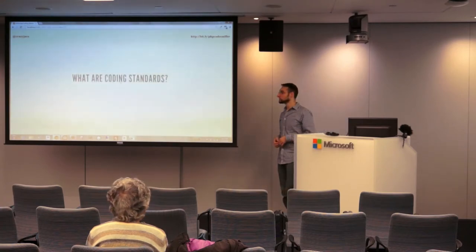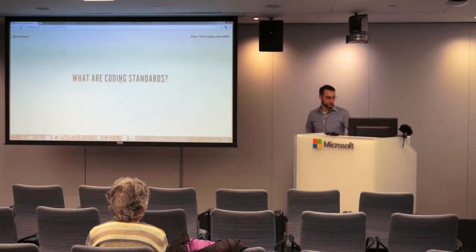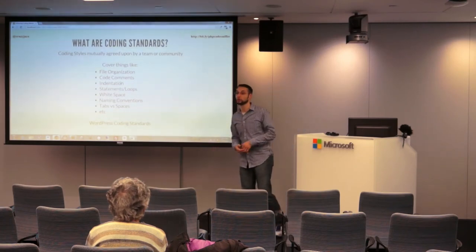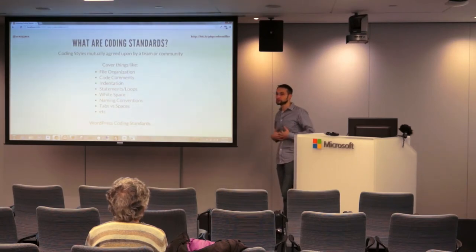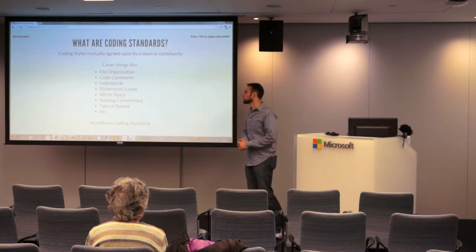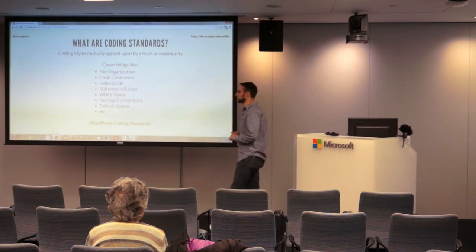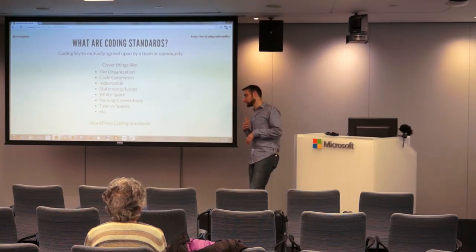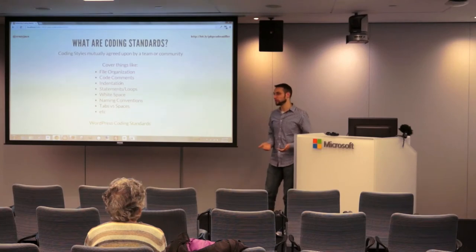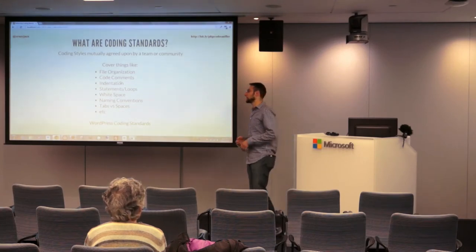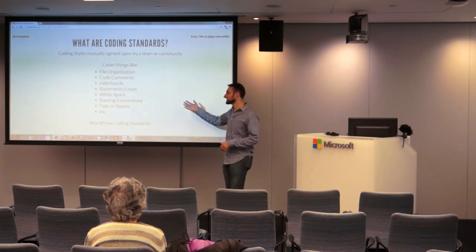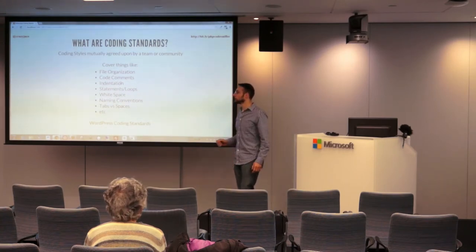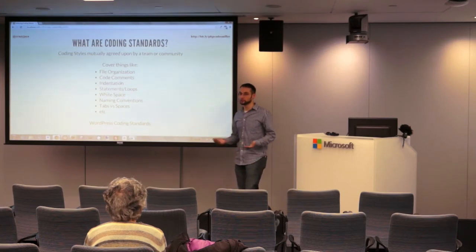So the next question is: what are coding standards? Well, coding standards are basically a coding style usually agreed upon by a team or a community. In our case, we're hopefully all using WordPress, and WordPress has its own coding standards — I've actually linked to it in the slides. More generally, a coding standard covers a multitude of things that seem very innocuous and simple, like file organization, indentation, whitespace, the ever-popular tabs versus spaces debate — very common things that you kind of take for granted on a daily basis.